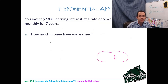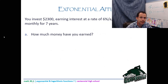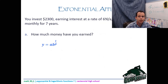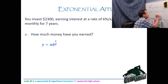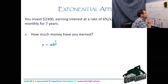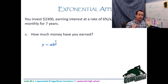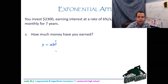Question: you invest $2,300 at 6% per annum compounded monthly for 7 years. How much have you earned? Using the formula sheet formula: b = 1 + (0.06 ÷ 12), the exponent is 12t (since monthly means period = 1/12 year), and a = 2,300. Plugging into the calculator gives $3,496.85.